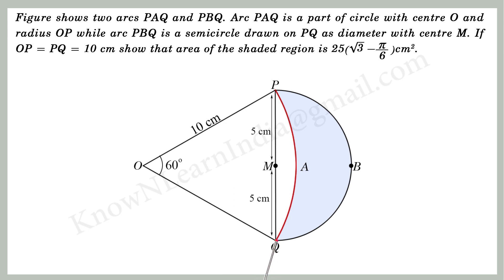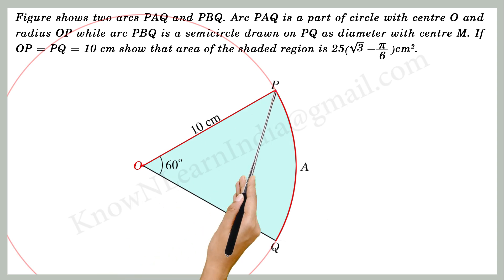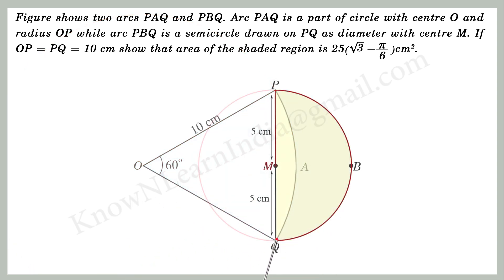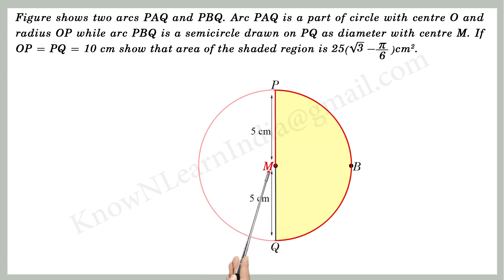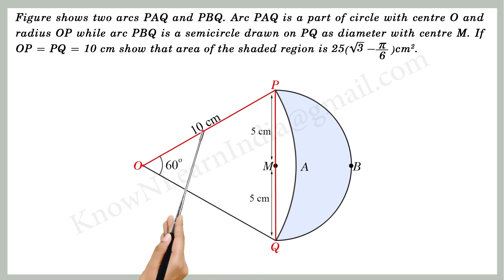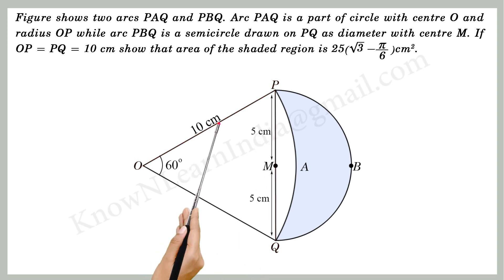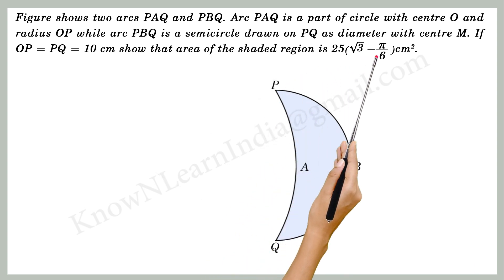The figure shows two arcs Paq and Pbq. Arc Paq is a part of a circle with centre O and radius Op, while arc Pbq is a semi-circle drawn on PQ as diameter with centre M. If Op is equal to PQ is equal to 10cm, show that the area of the shaded region is 25 times root 3 minus pi by 6 cm².